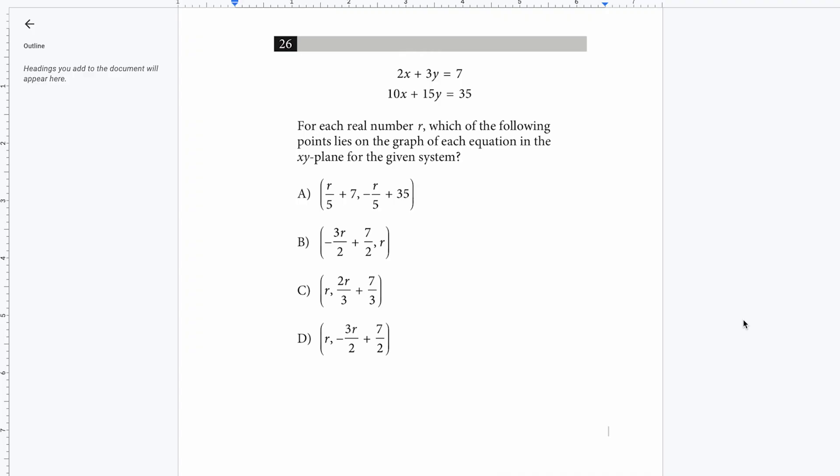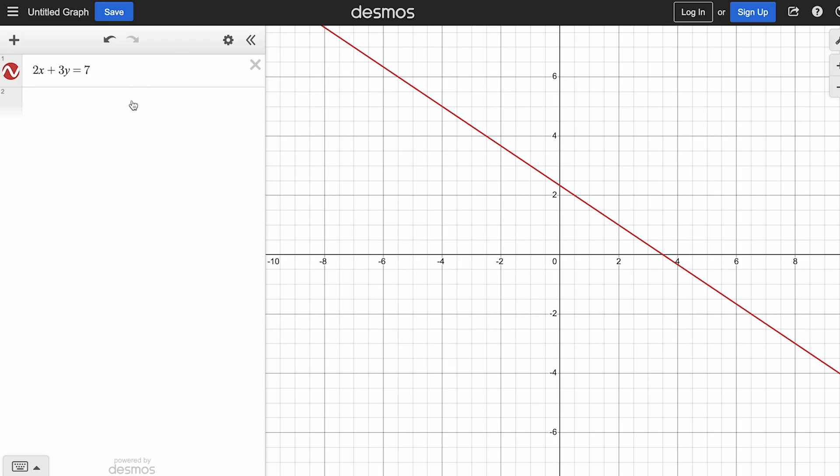So you have the problem right there on the screen. It says, for each real number R, which of the following points lies on the graph of each equation in the XY plane for the given system? What I'm simply gonna do is, I will plug both of these equations in my graphing calculator and see what do I get. So I've already done that for the first one. I'm quickly gonna put in the second one as well. It's 10X plus 15Y equals 35. Now you all must be quick enough to notice that both the lines coincide with one another.